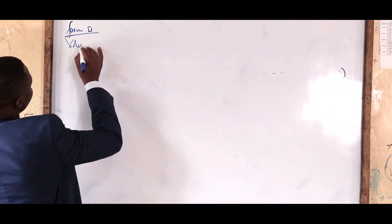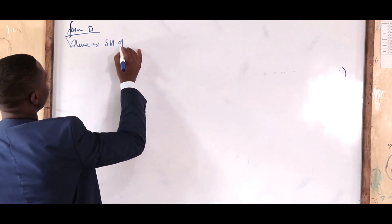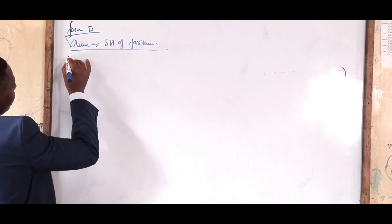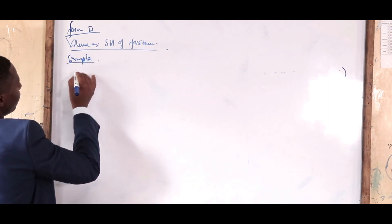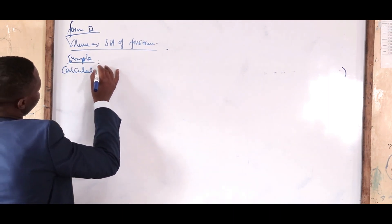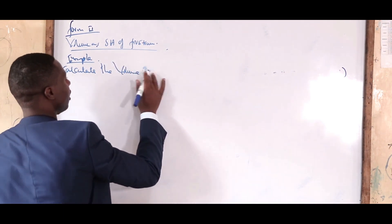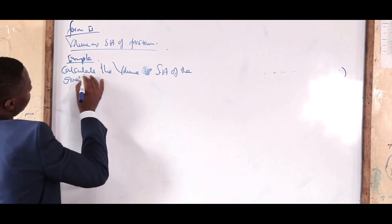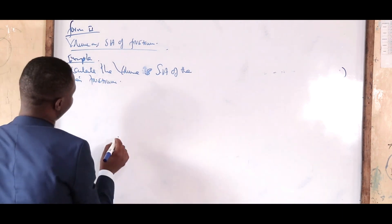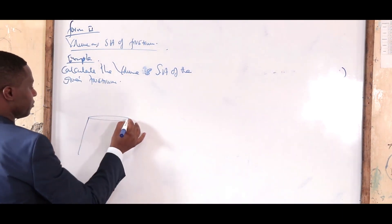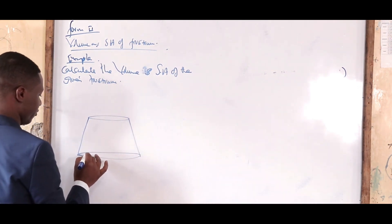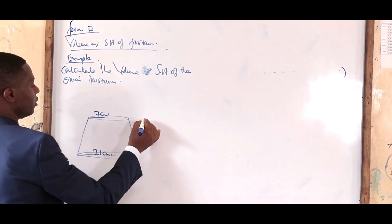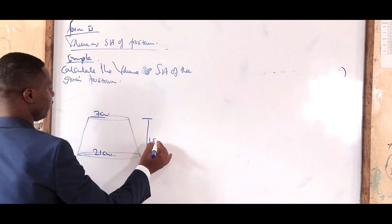We're looking at volume and surface area of a frustum. Let's look at an example where you're told to calculate the volume and surface area of a given frustum. The frustum is given by radii of 21 cm and 7 cm, and the vertical height is 15 cm.